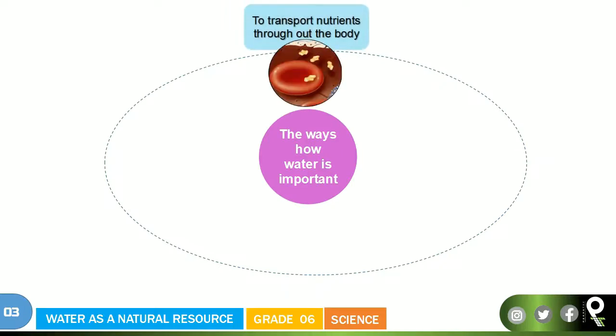The first one — to transport nutrients throughout the body. When you are taking food, like eating bread, rice, banana, chocolate, or whatever you are eating, that will break into smaller form and go through the bloodstream. Water is helping with that, so to transport nutrients throughout the body, water is required. When you don't have enough water, the nutrients will not be transported.